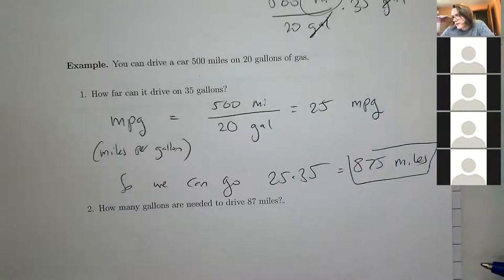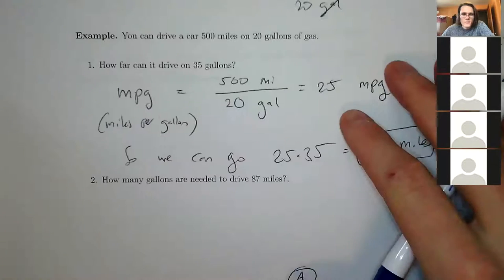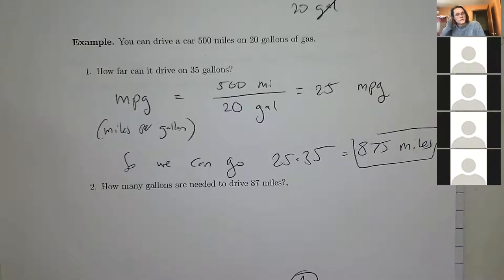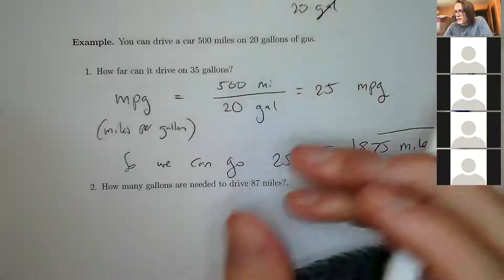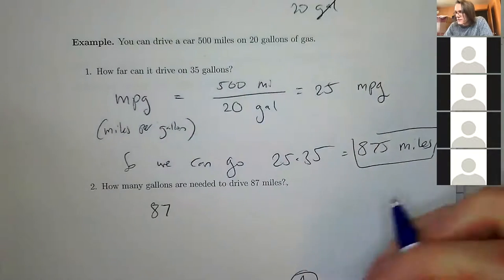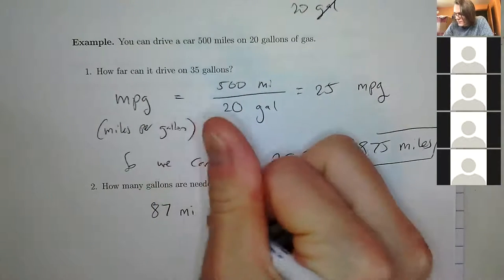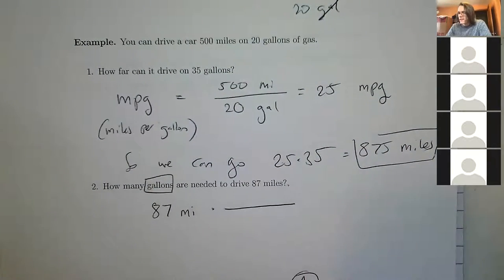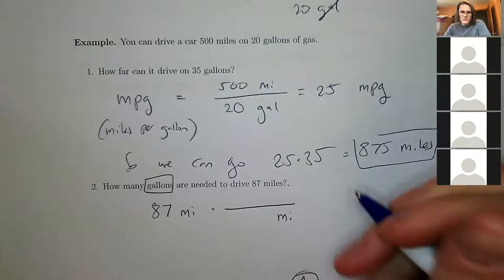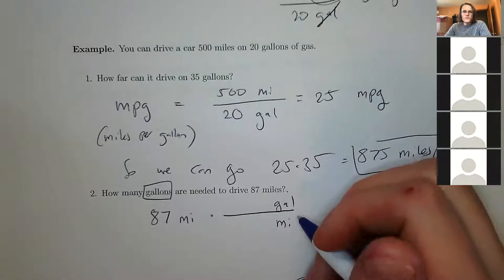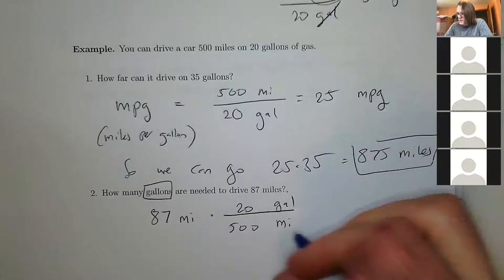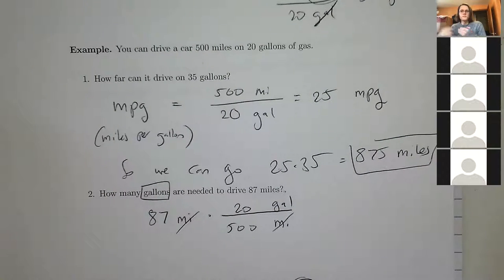Next part: how many gallons are needed to drive 87 miles? Divide 87 by 25. You can also justify it with unit analysis: start with 87 miles, multiply by a conversion factor with miles on the bottom and gallons on the top. Using the relationship 500 miles = 20 gallons: 87 × 20 / 500, which is about 3.5 gallons — same as dividing by 25.